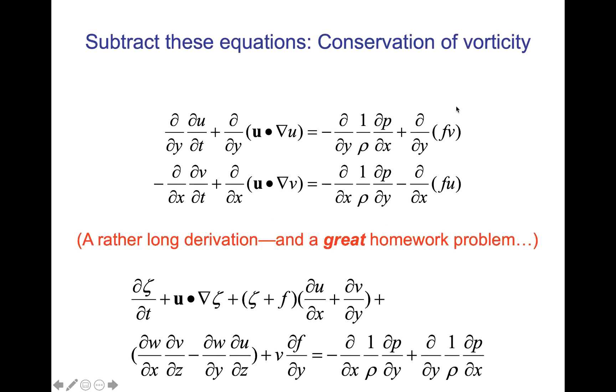After you do a good job on getting those derivatives, you subtract the two equations. You're going to take du/dy minus dv/dx. It's a fairly long derivation, but here's the answer that you should be working towards, which would be d zeta/dt plus u dot del zeta. You should recognize this as the total derivative of zeta, the vertical component of the relative vorticity.